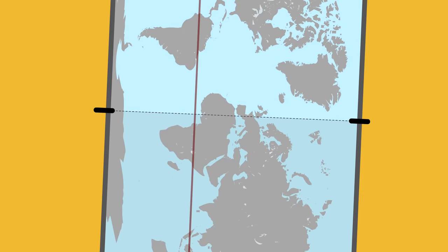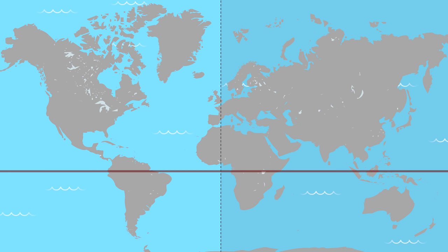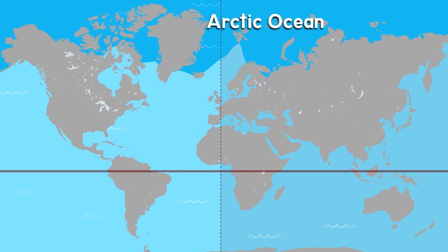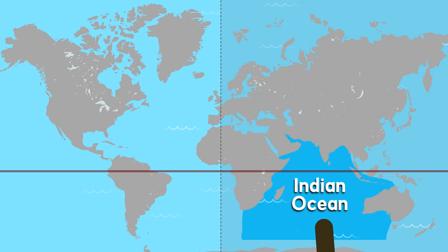The world is mostly water — I'll say it again, the world is mostly water, filled with oceans. What are the oceans called? Pacific Ocean, Atlantic Ocean, Arctic Ocean, Indian Ocean, and the Southern Ocean.